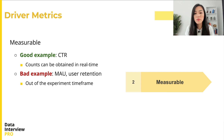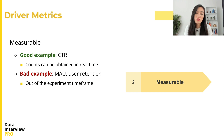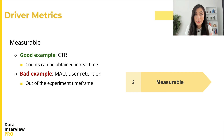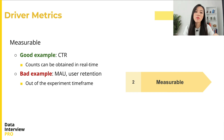Driver metrics should also be measurable, meaning we should be able to calculate the metric with the data collected during the experiment period. In tech companies, most experiments are designed to run within a time frame of days or weeks, so the metric we select should be suitable for such time frames. The click-through rate is very simple and easy to measure — it's simply the number of clicks divided by the number of impressions. Conversely, monthly active users and monthly user retention rate are bad ideas because they cannot be calculated within the typical time frame of the test.